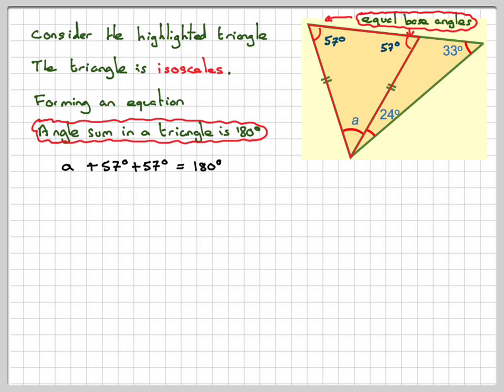Gathering these two terms together, we get A plus 114 equals 180. Minus 114 from both sides, we get that A is equal to 66 degrees.